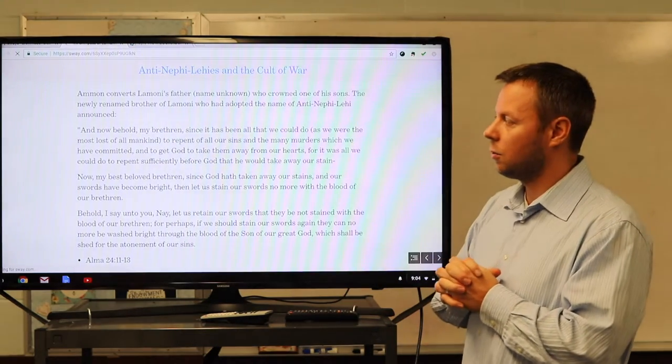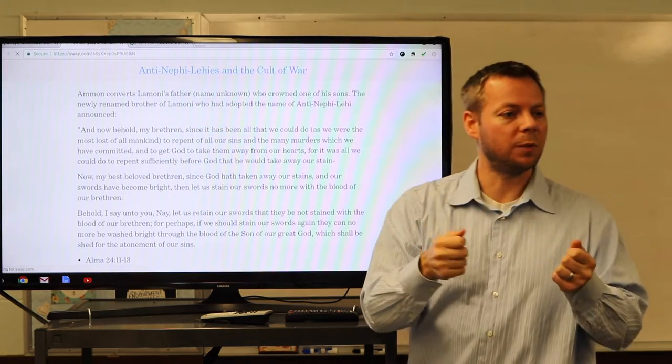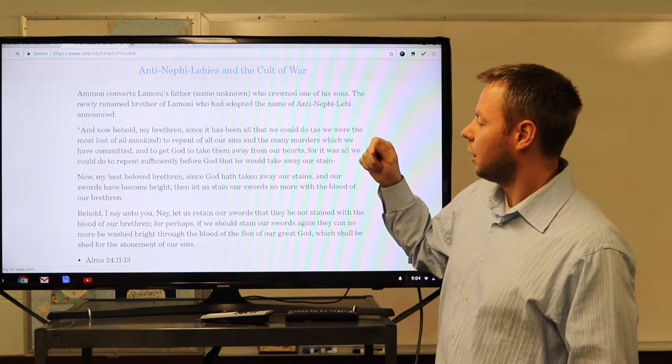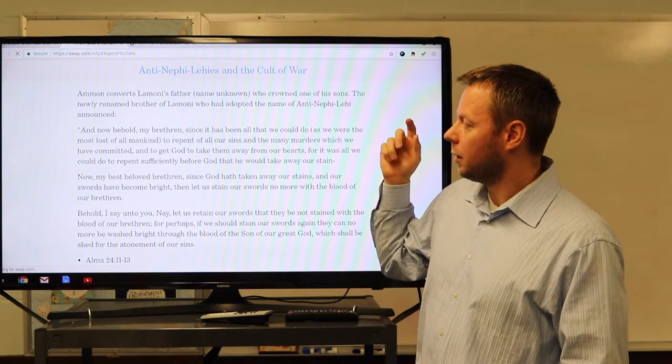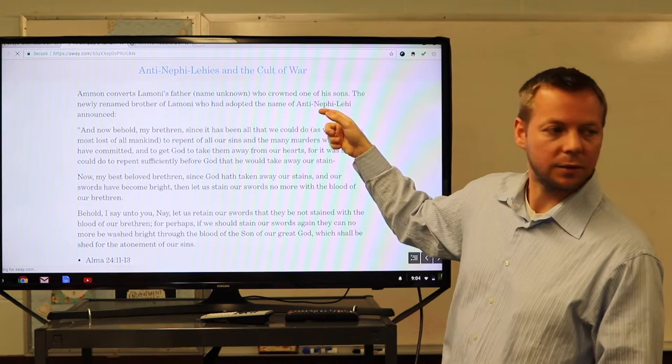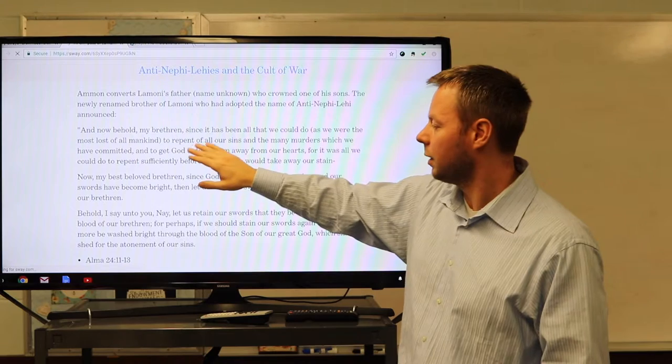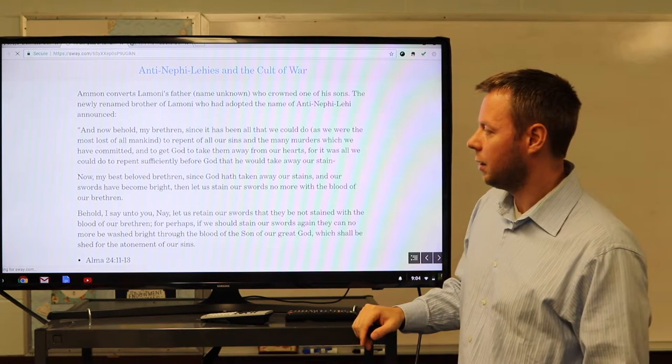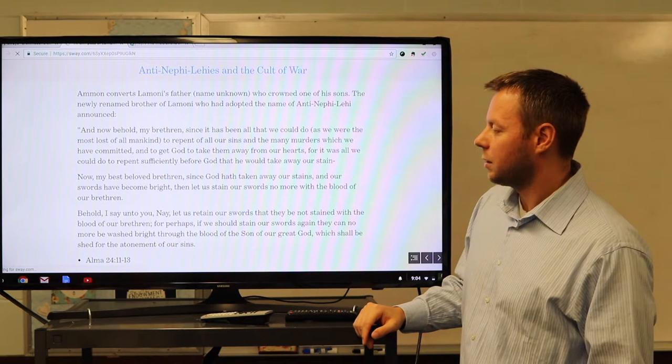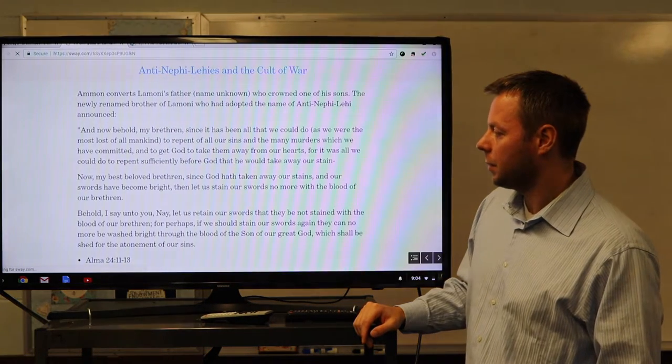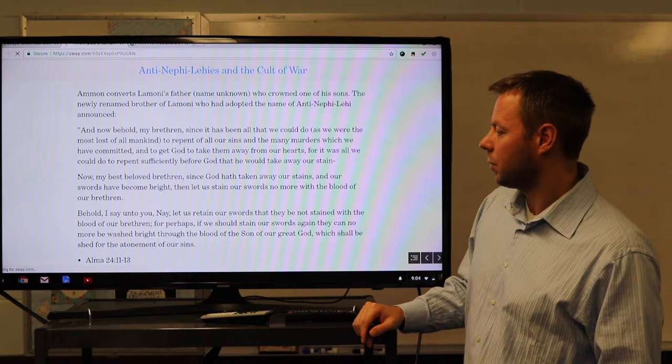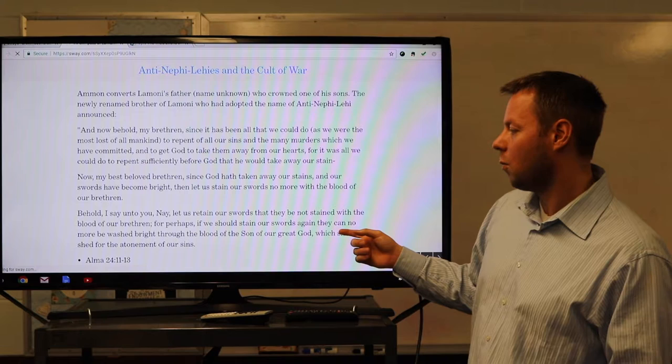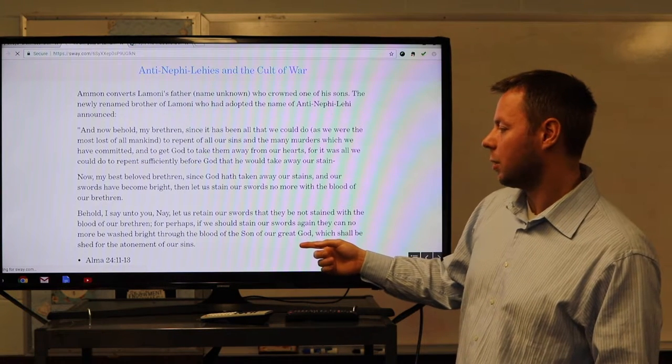So let's get a little bit more into the cult of war, and to do that, we're going to talk about the anti-Nephi-Lehis. We talked about their swords being stained with blood, their wood swords being stained with blood. So we know the story. Ammon converts Lamoni's father. We don't know his name, he's just Lamoni's father. He crowns one of his sons, whose original name we don't know, but he renames himself upon assuming the throne anti-Nephi-Lehi, right? And then he makes this announcement. Now behold, my brethren, since it has been all that we could do as we were the most lost of all mankind, to repent of all of our sins and the many murders which we have committed, and to get God to take them away from our hearts, for it was all we could do to repent sufficiently before God that he would take away our stain. Now my best beloved brethren, since God hath taken away our stains and our swords have become bright, let us stain our swords no more with the blood of our brethren. Behold, I say unto you, Nay, let us retain our swords that they may not be stained with the blood of our brethren, for perhaps if we should stain our swords again, they can no more be washed bright through the blood of the Son of our great God, which shall be shed for the atonement of our sins.